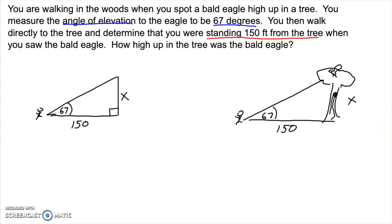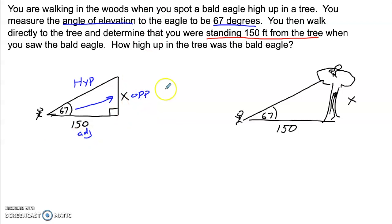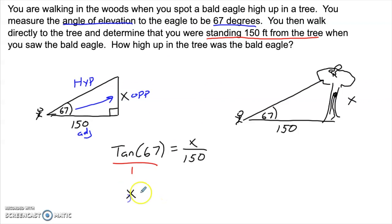This is a basic trigonometric question. The angle is 67 degrees; across from it is the opposite side of the triangle. The 150-foot side is adjacent because the side across from the 90-degree angle would be the hypotenuse. Since we don't know the hypotenuse, we'll use the opposite and adjacent. We can set up a tangent equation: tangent of 67 equals x over 150. Cross-multiplying, x equals 150 times the tangent of 67. Using a calculator, that's approximately 353.37, so about 353 feet.